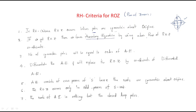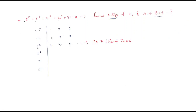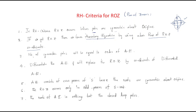We form the auxiliary equation using the coefficients from the row above the ROZ. Here all entries in the s^3 row are zero, so we use the s^4 row. The auxiliary equation is: s^4 + 3s^2 + 2. The first term is 1·s^4, the second is 3·s^2, and the third is 2.